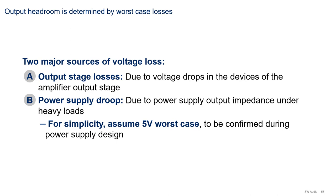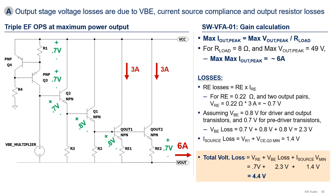There are two major sources of voltage loss: output stage losses, which are due to voltage drops in the devices of the amplifier output stage; and power supply droop, which is due to supply output impedance under heavy load. For simplicity, let's assume 5 volts worst case for power supply droop — to be confirmed when we design the power supply. If the droop is less than assumed, we can either crank the gain slightly up, increase the input sensitivity spec, or lower the supply rail voltage. Output stage voltage losses are due to VBE, current source compliance, and output resistor losses.